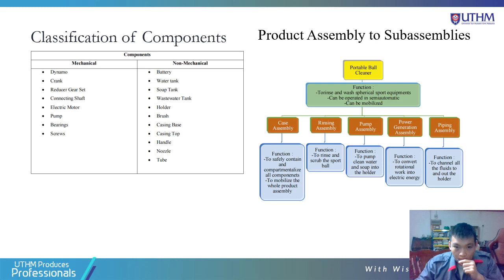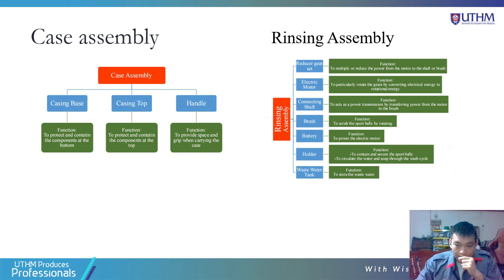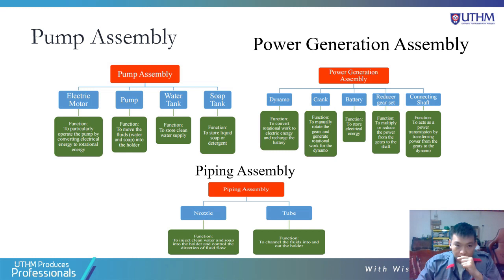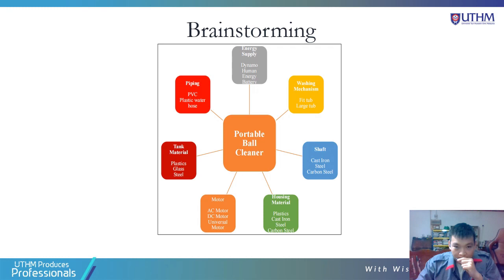Next is the classification of components, where our components are separated into mechanical and non-mechanical. Next is the product assembly to sub-assemblies, which further explains each sub-assembly's function. There is also the case assembly and rinsing assembly, the pump assembly, power generation assembly, and piping assembly with their respective parts and function explanations. Finally, it's brainstorming, where we decide each sub-assembly's material. That is all from me. Thank you.